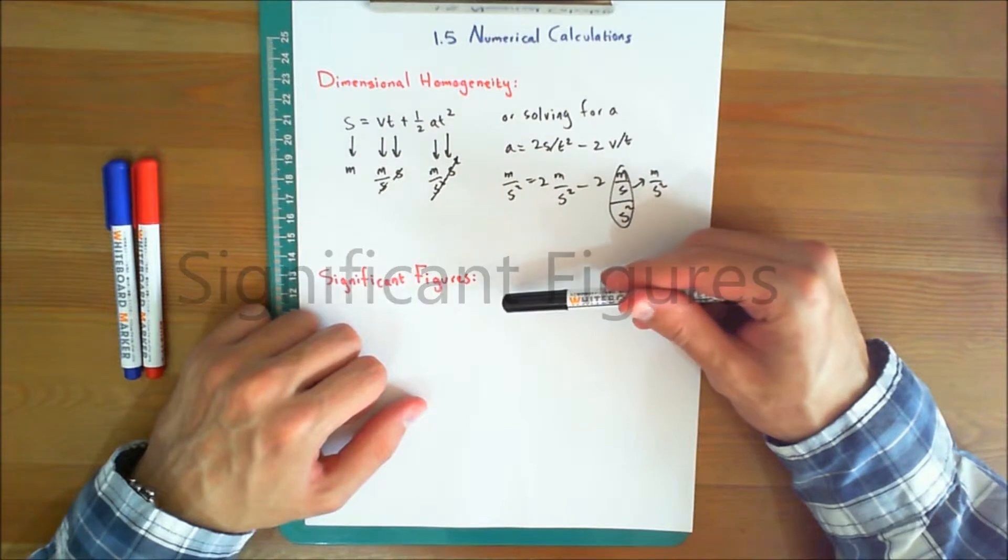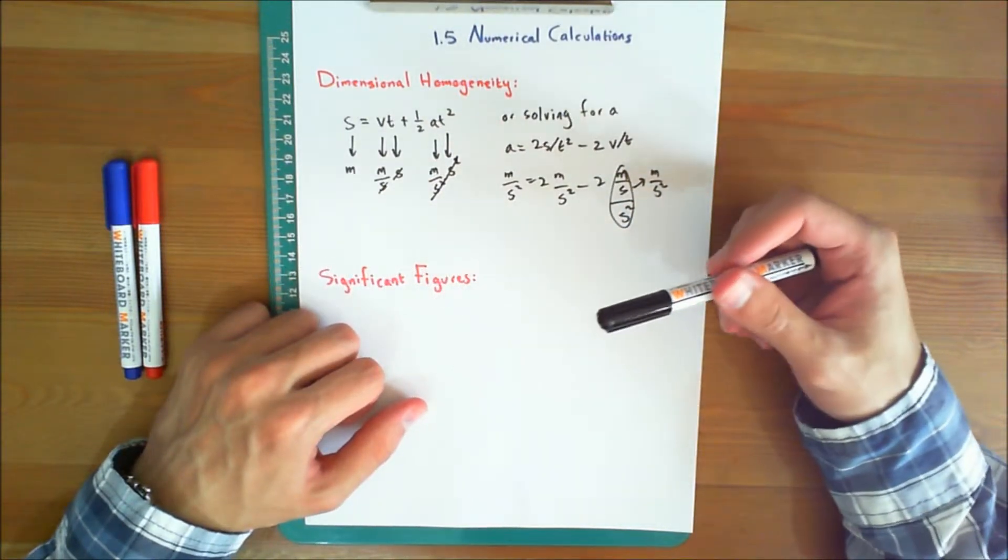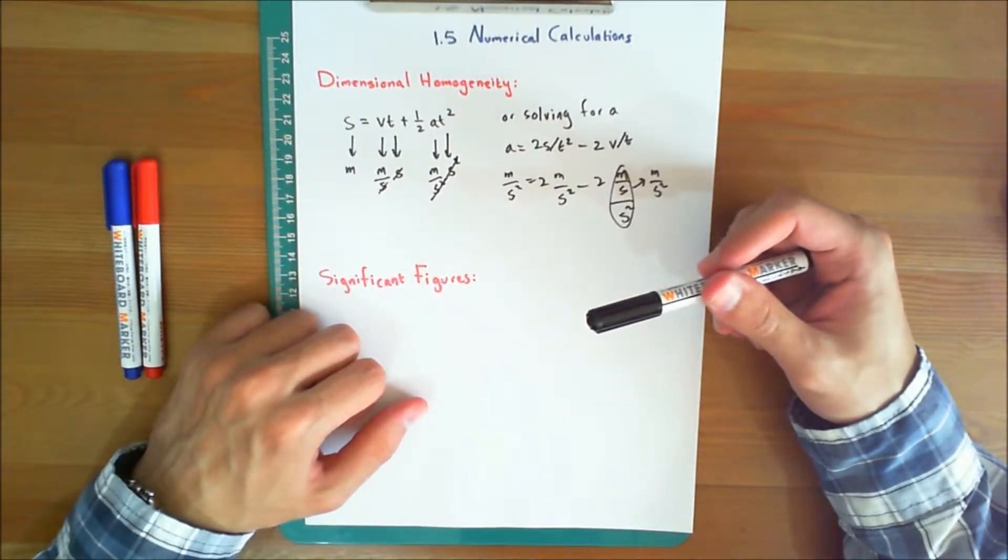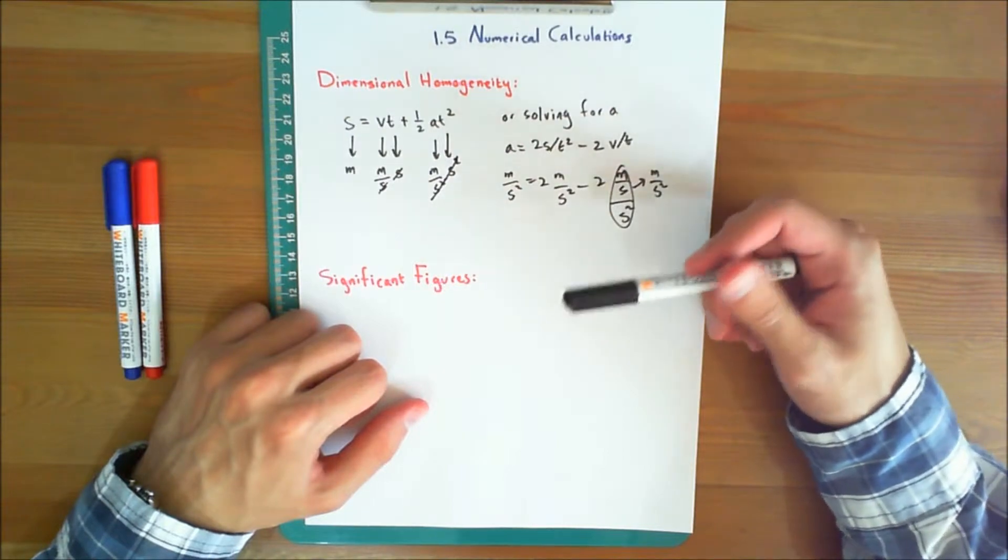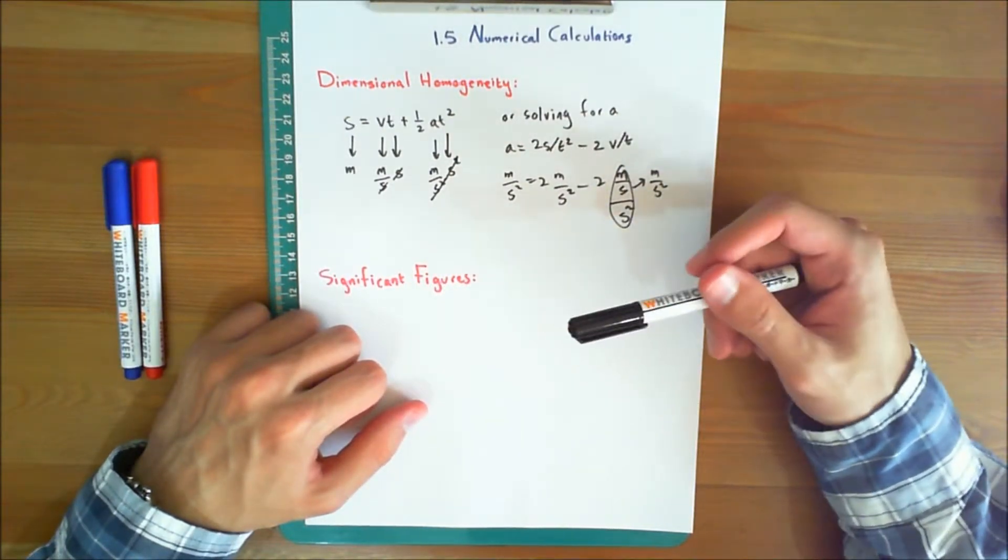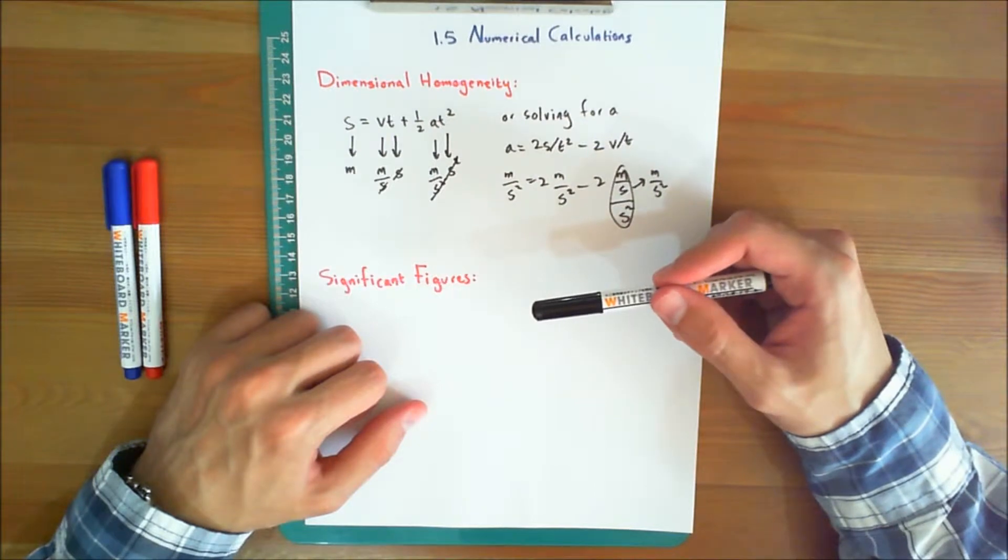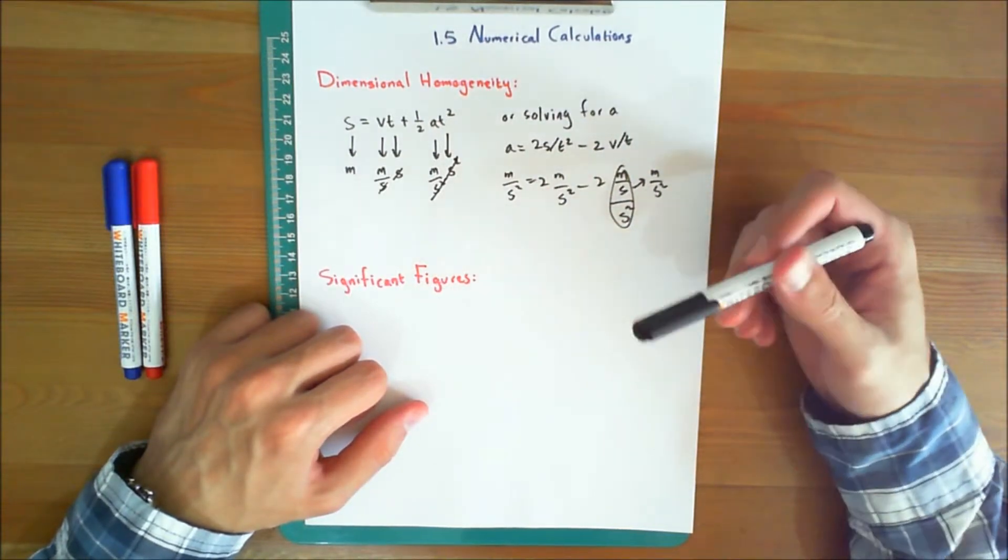Next, we'll discuss significant figures. The accuracy of a number is specified by the number of significant figures it contains. A significant figure is any digit, including a zero, provided it is not used to specify the location of the decimal point for the number.